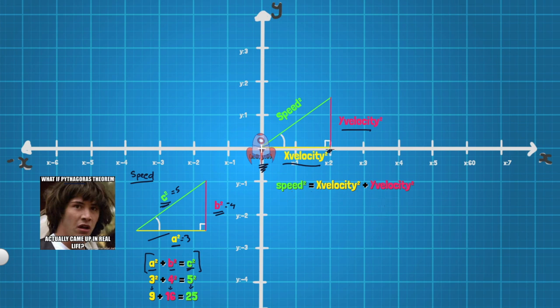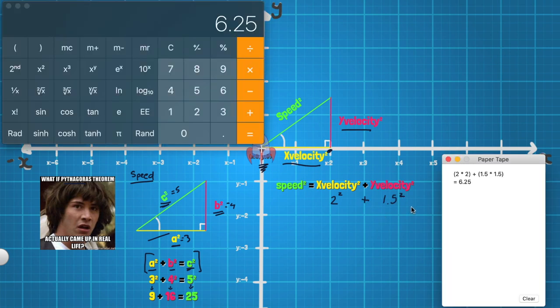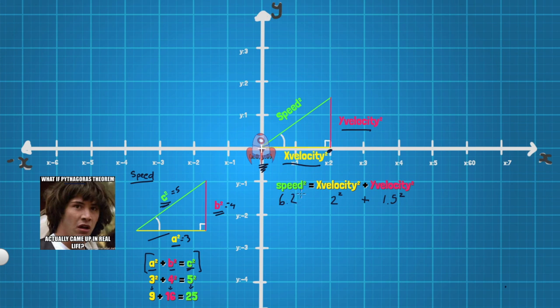Now our change in x is around about 2. So that would be 2 squared. Our change in y value, well that's around 1.5. So we go 1.5 squared here. We need to add those two things together and I just got the calculator to help us out with that. 2 squared. So 2 times 2 plus 1.5 times 1.5 is equal to 6.25. But there is an issue with this 6.25 is actually the speed squared. That's what the two in the top right hand corner means. It means squared. To find the actual speed, we need to take what's called the square root.